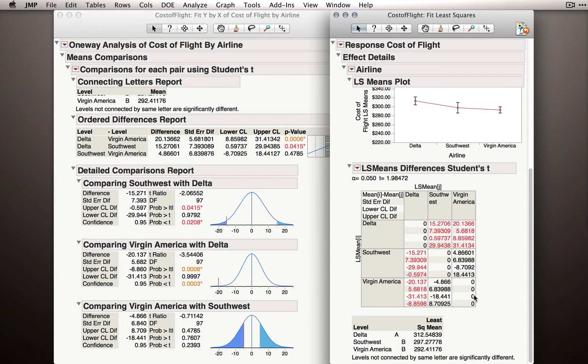Notice that delta vs. southwest is the same as southwest vs. delta, with the exception of which mean difference we're looking at. In one case, one mean is subtracted from the other, and in the other case, the other mean is subtracted from the first.